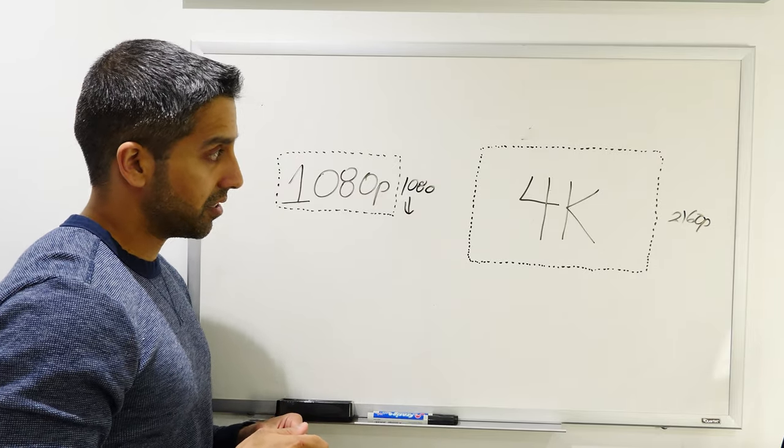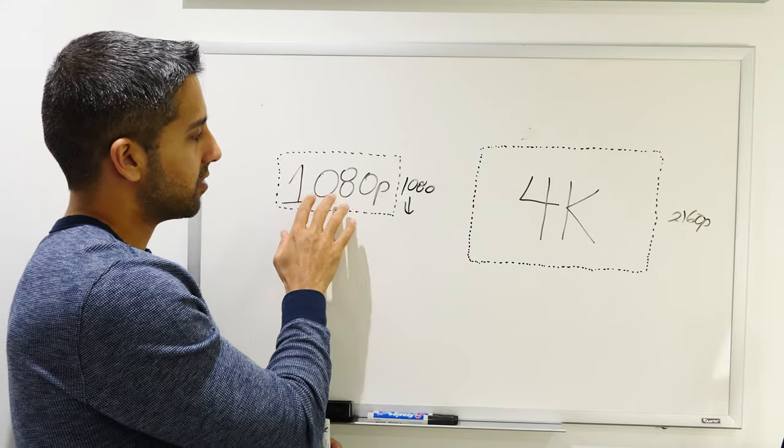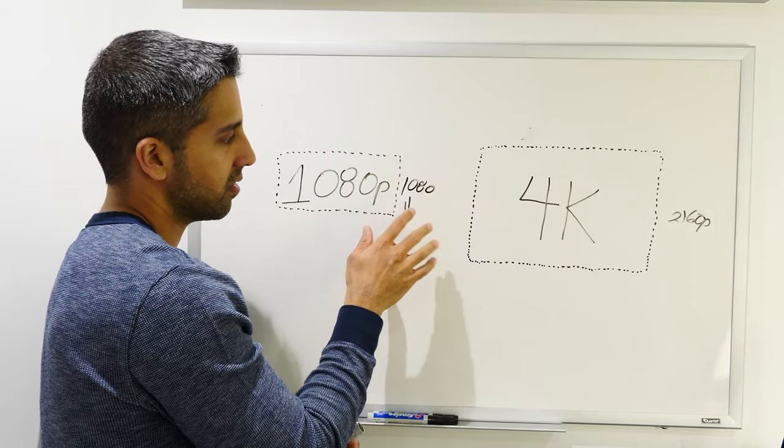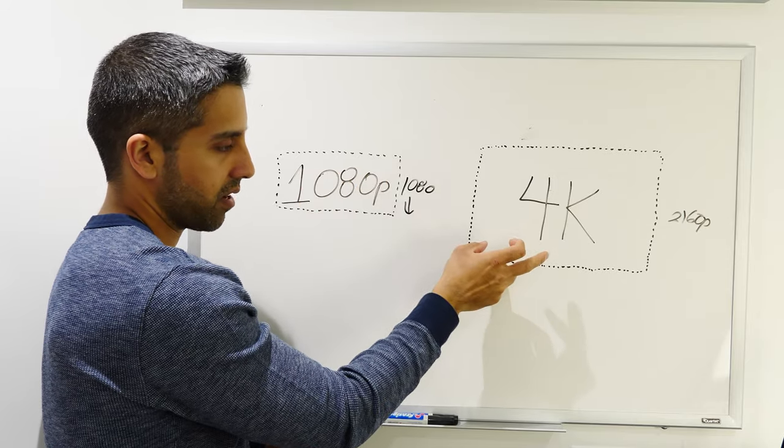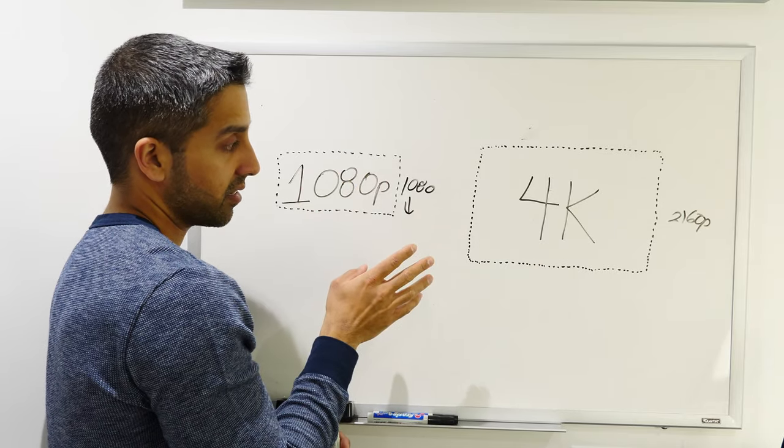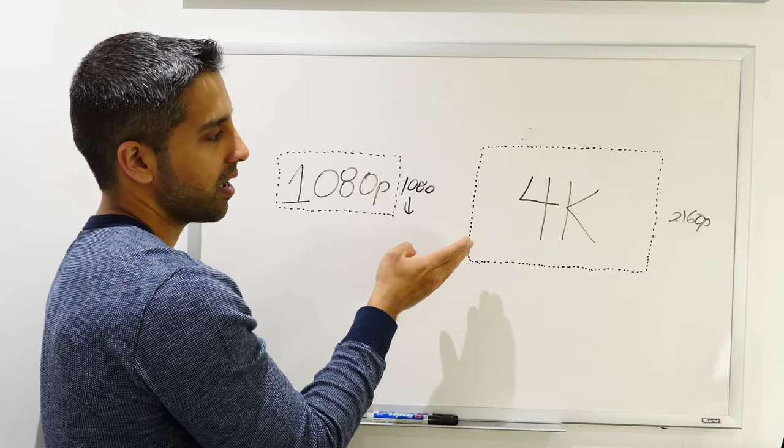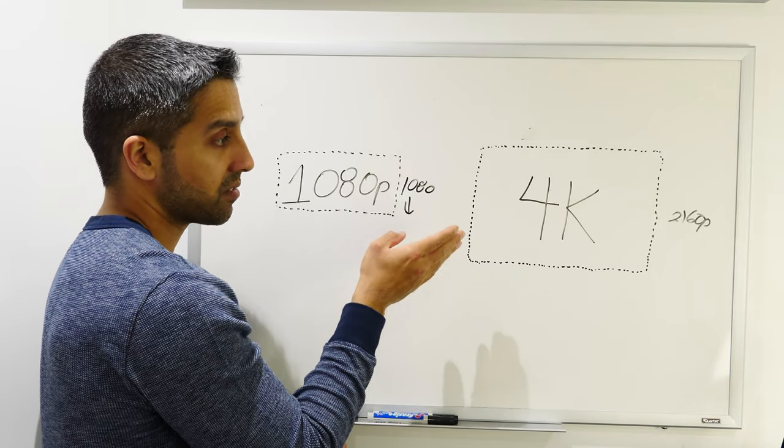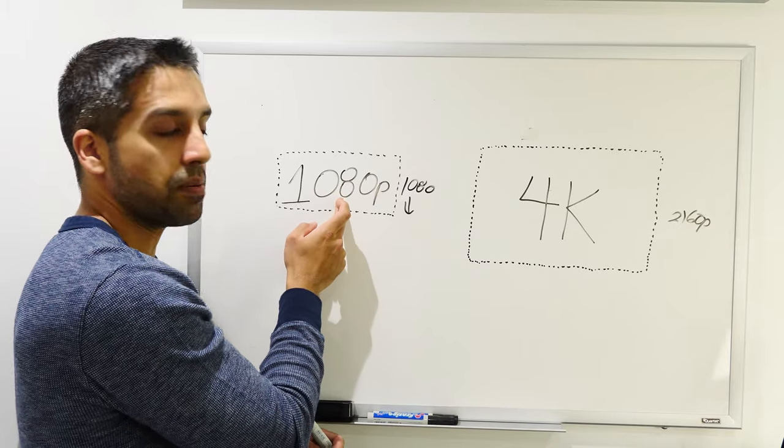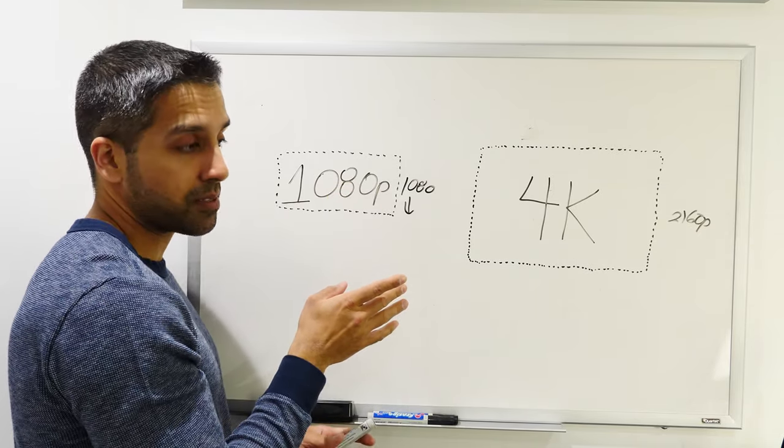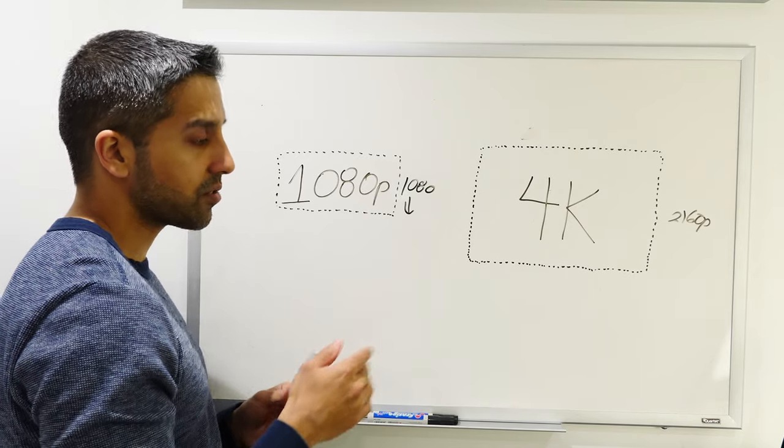This is where TV upscaling technology comes into play. What it'll basically do is try to take this resolution and put it in this display. If you try to take 1080p into a 4K display without TV upscaling technology, the reason it wouldn't fit the entire screen is because 4K has a few million pixels more than a 1080p video would.